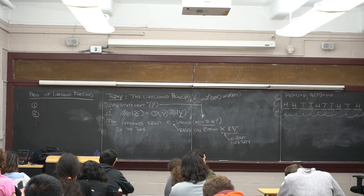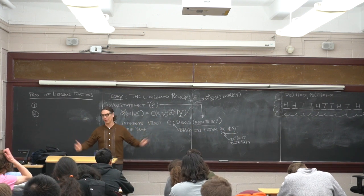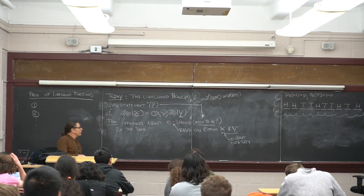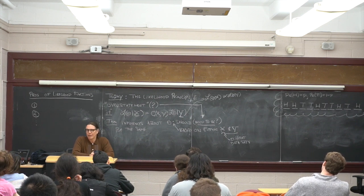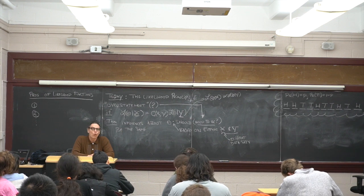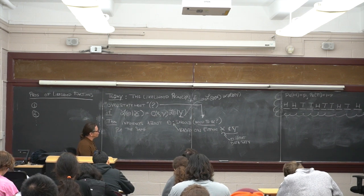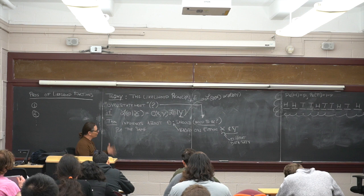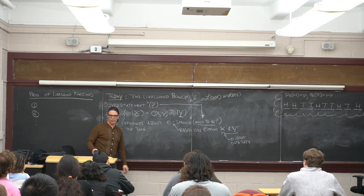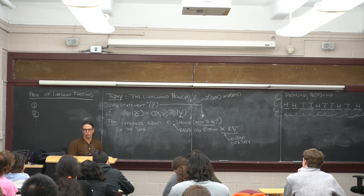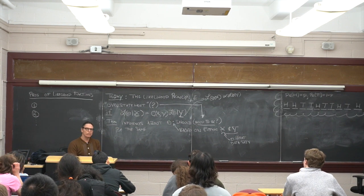If two likelihoods have the same shapes, they should supply the same information. The likelihood principle says if two likelihoods are proportional to each other — i.e., equal up to some constant — those normalizing constants aren't important. We usually just write that the likelihoods are proportional to each other, and we've already said that concept before.